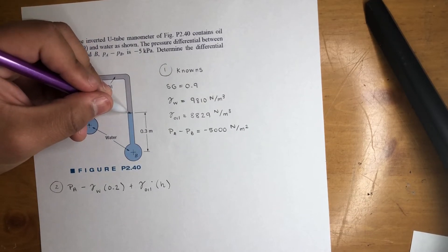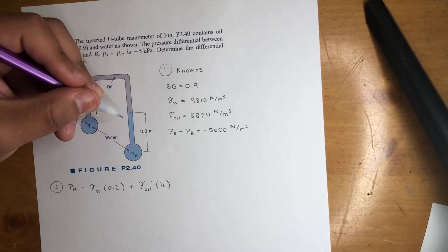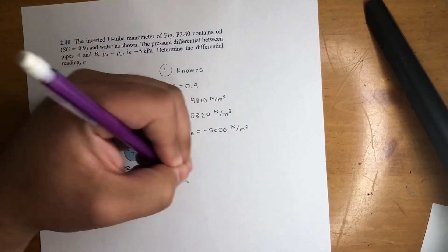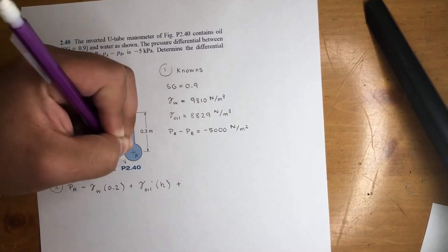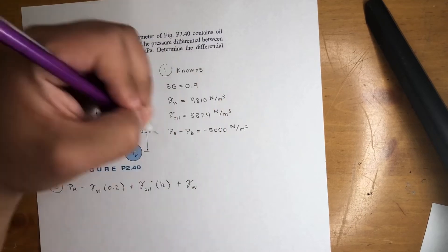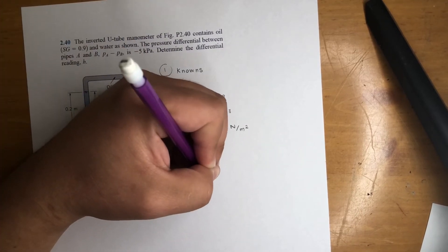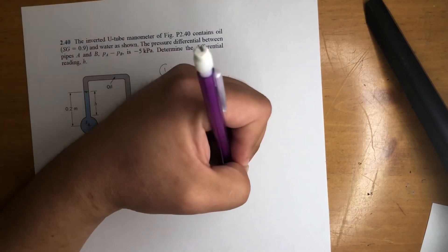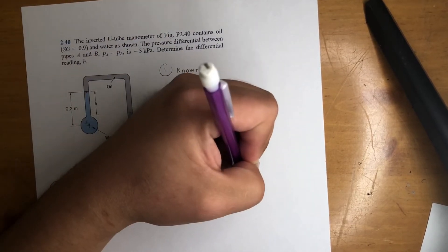Okay. So now we're here. Now we're going down again, but this time we're dealing with water. So we're going to add because we're going down, gamma of water times the height 0.3. Put the meters, same thing. And that's equal to our destination PB.